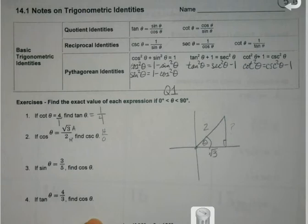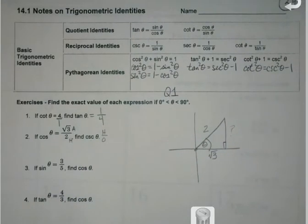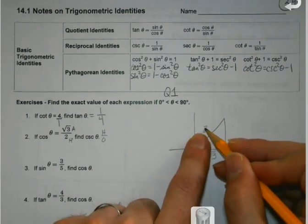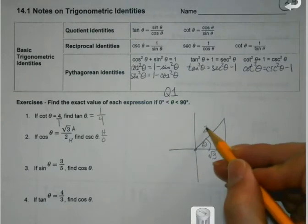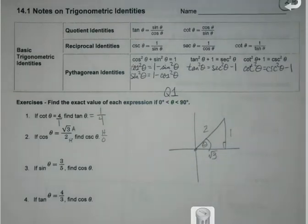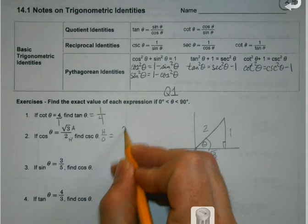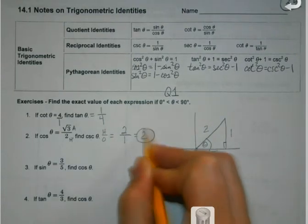My inverse of sine is going to be hypotenuse over opposite, but I don't know opposite. How do I find my mystery side? We're just going to use the Pythagorean theorem. I'd have 4 minus 3 means my opposite is just going to be 1. So my cosecant would be hypotenuse over opposite, or just plain old 2. Don't make life overcomplicated on yourself.